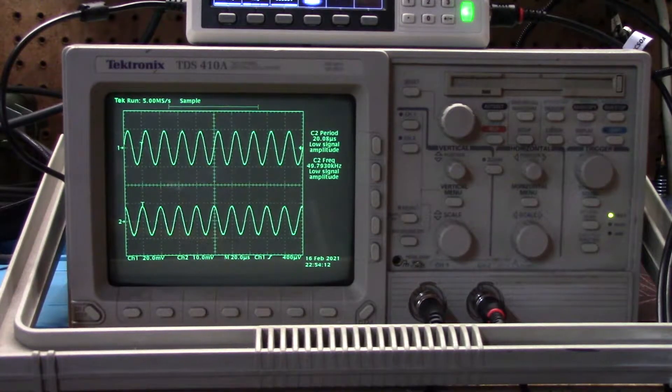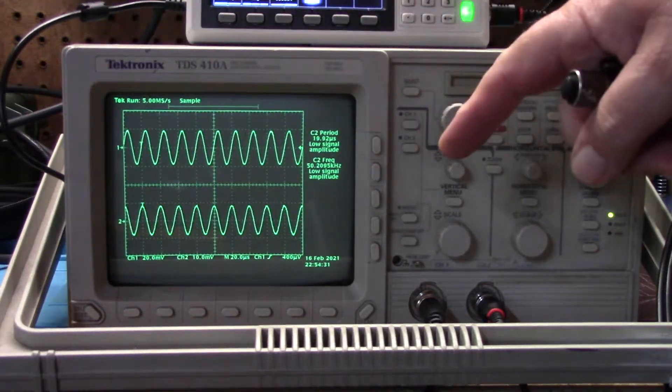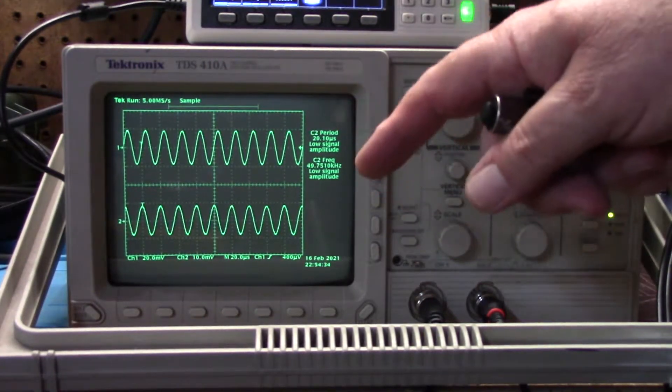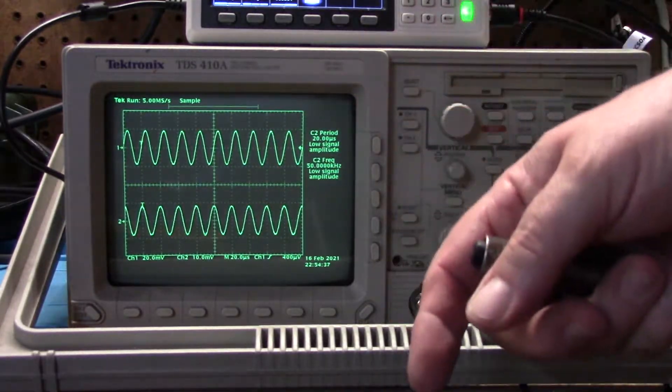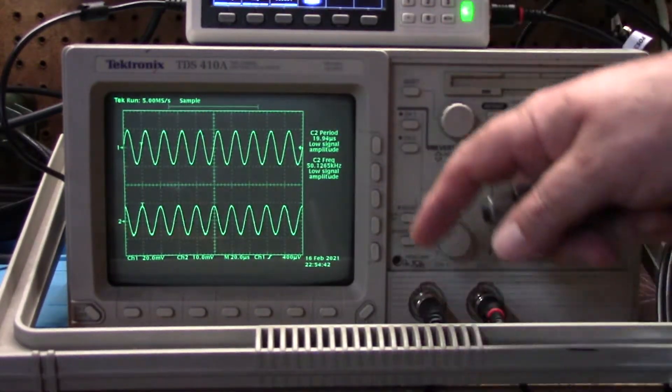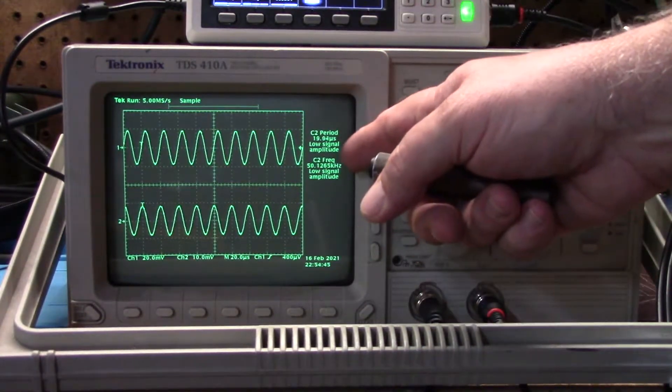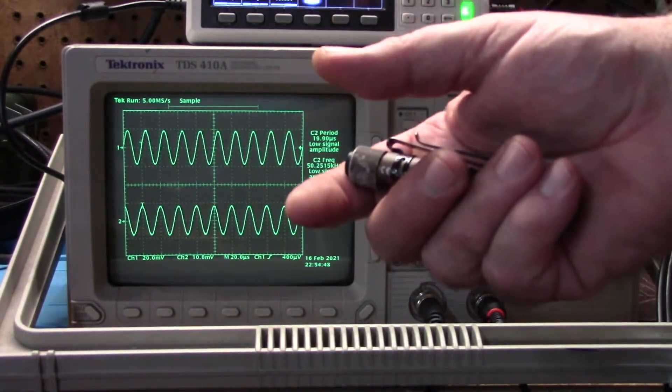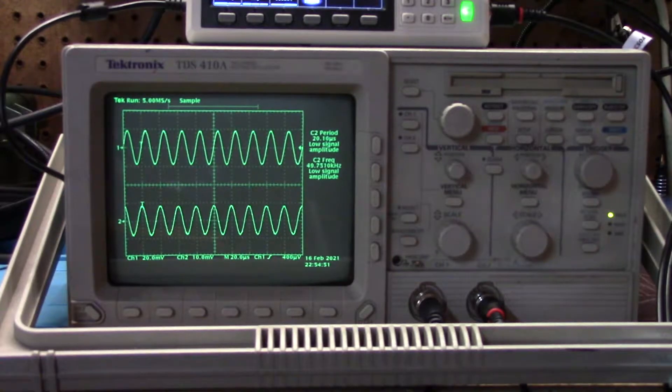Now what this does not have is a fast Fourier transform which if you watch one of my other scope videos, the FFT function on a modern scope can take an electrical signal and transform it to signal amplitude over time versus electrical over time so you actually get a frequency. This is voltage over time. So with the FFT function on a modern scope or a fancier scope of this era you could actually convert voltage over time to amplitude over time so it would show you the frequency. But the measurement functions give you that same information so unless you specifically want to see a frequency line it doesn't really change anything.